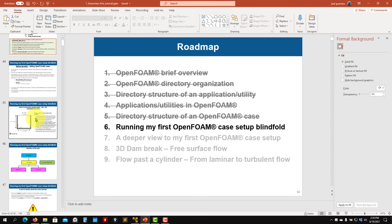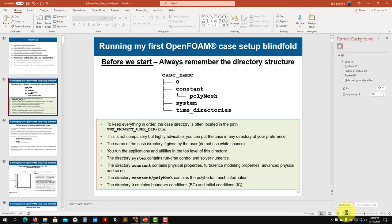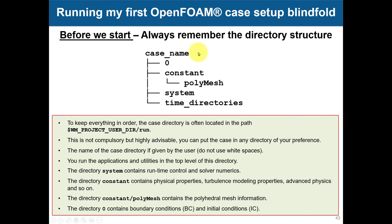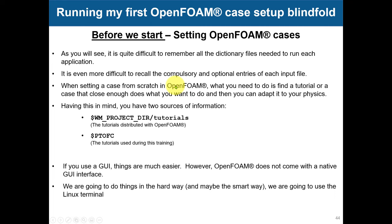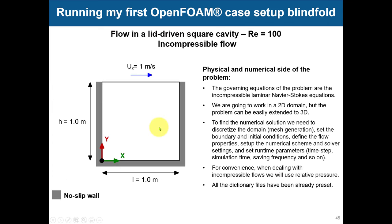Let's run this first case. Just to remind you, at this point it's clear that we need to have this data structure always. We're going to see what files are inside each directory and how the mesh is created. Always remember — disregarding the case — you need to have the zero, constant, and system directories. Also, this PTOFC is pointing to the location where you extracted all tutorials. You can put it anywhere, but try to keep things in order.